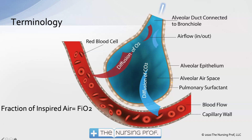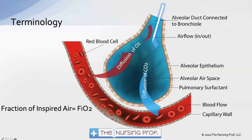Another term used with mechanical ventilation is fraction of inspired air, or FiO2 — the amount of oxygen in the air going into the lungs. FiO2 is expressed as a decimal, not a percentage: 100% would be 1.0, fifty percent would be 0.5. This tells us how much oxygen we are giving to the patient. While we'd like to know exactly how much oxygen is in the alveolus, we can't measure that directly, so FiO2 is the next best thing.